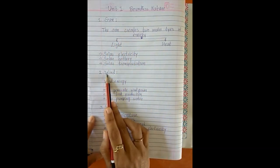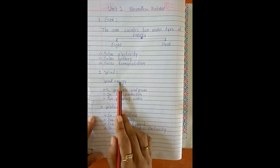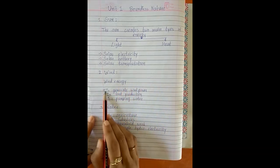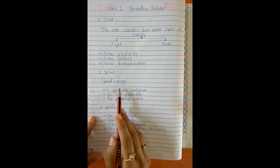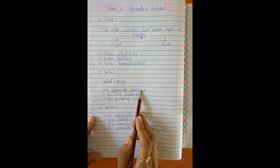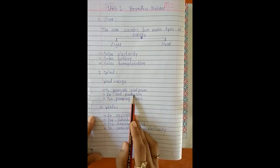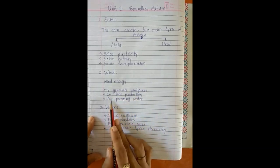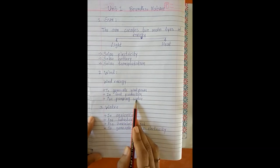Second is the wind. Wind energy is very useful for mankind. Though it is natural, it is very beneficial and without any charges we have generated wind power. We are also using it for pumping water and to grind meal. Here I have made some points regarding wind energy: to generate wind power, for food production, and for pumping water.